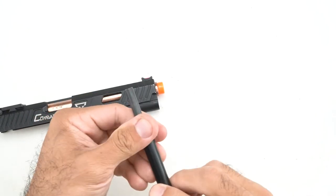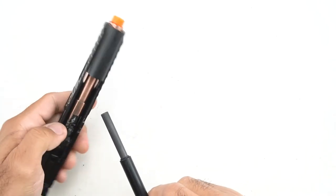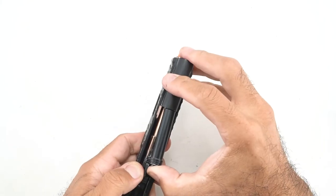Insert the spring onto the guide rod. Then put the plug on there and then compress it and then angle it all in.